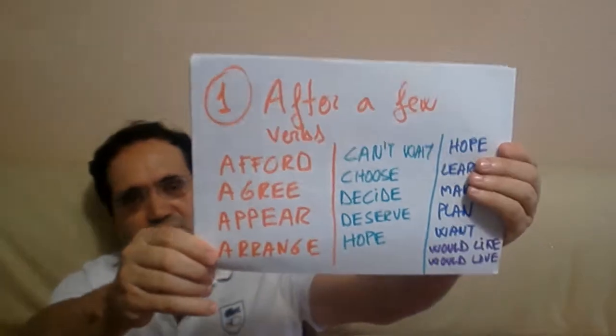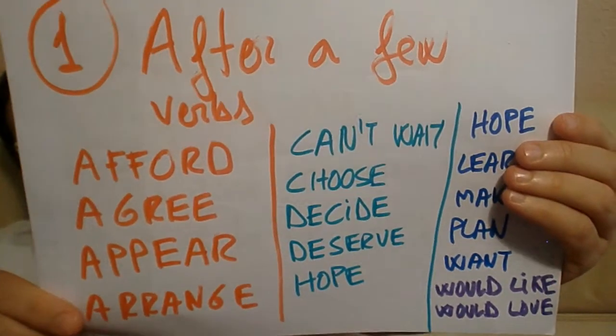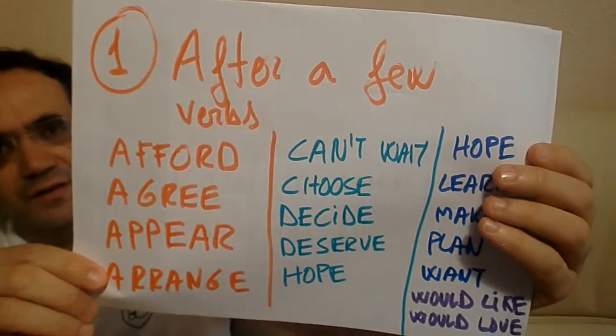Today we're going to focus on infinitives — when we use infinitives and not gerunds in English. The first rule: after these verbs that you can see in this picture, you should use the infinitive. This list has very common verbs like want, plan, learn, hope, and a few more difficult ones like deserve, can't wait, and arrange.